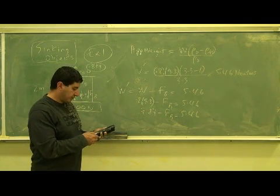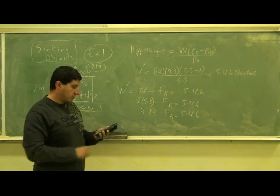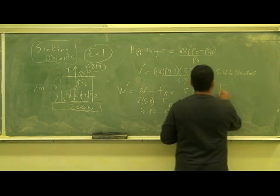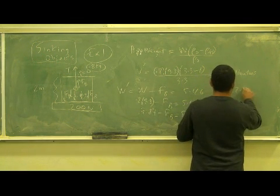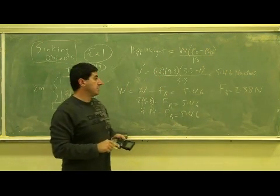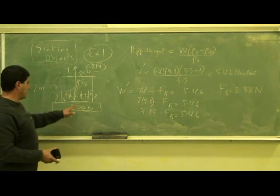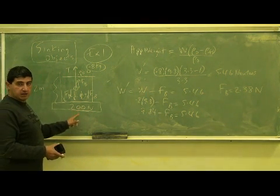FB is going to be 7.84 minus 5.46, you get 2.38. So the buoyant force is 2.38 newtons.